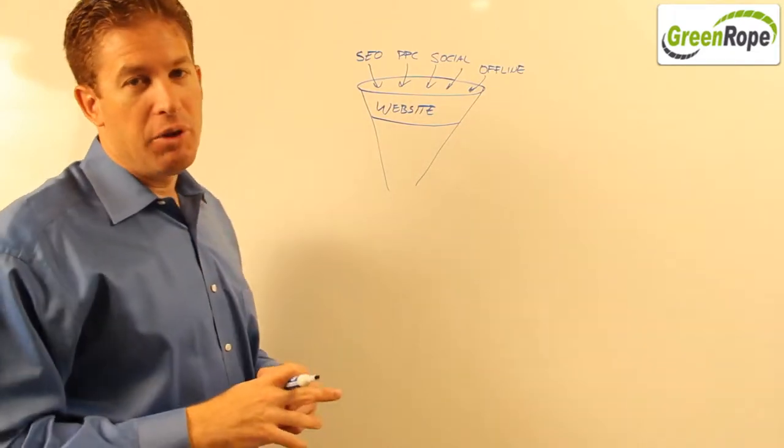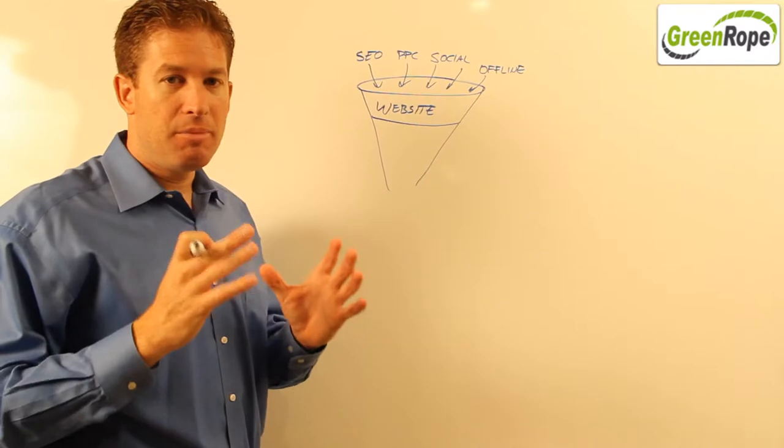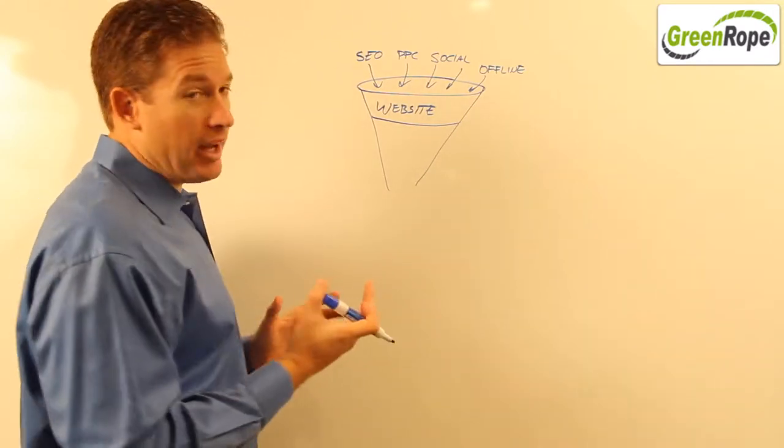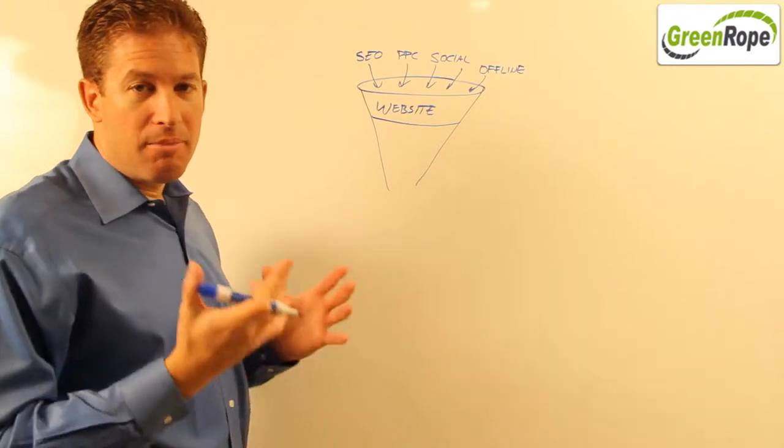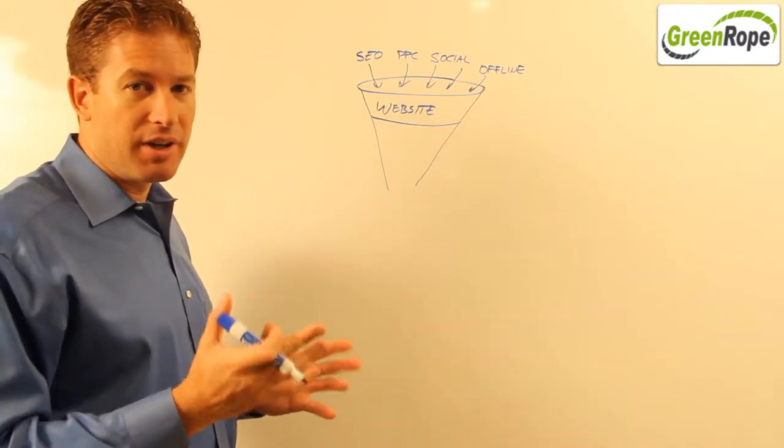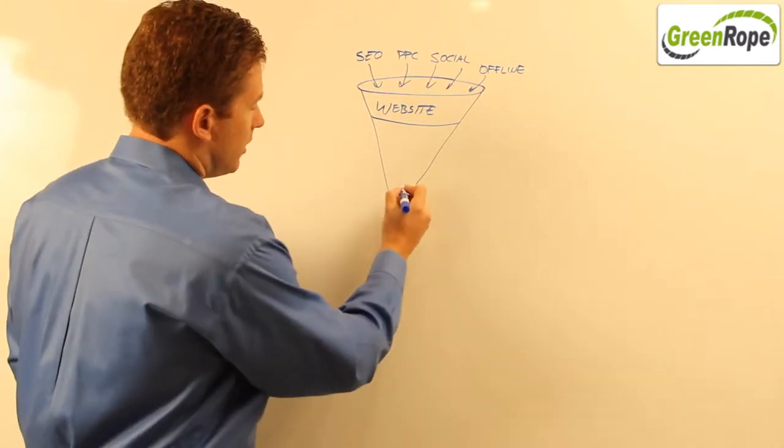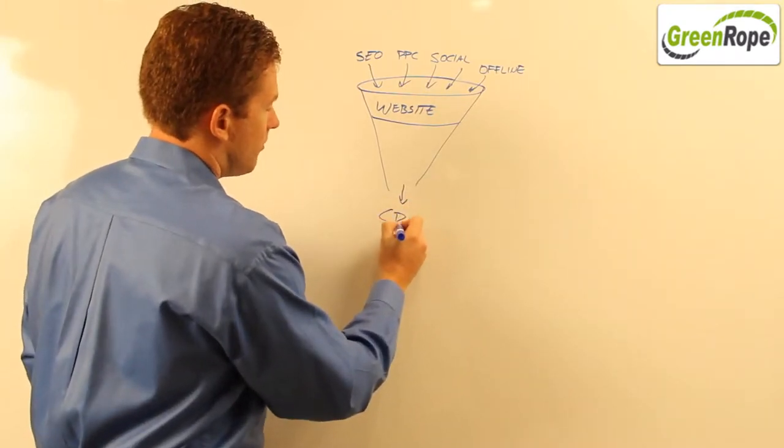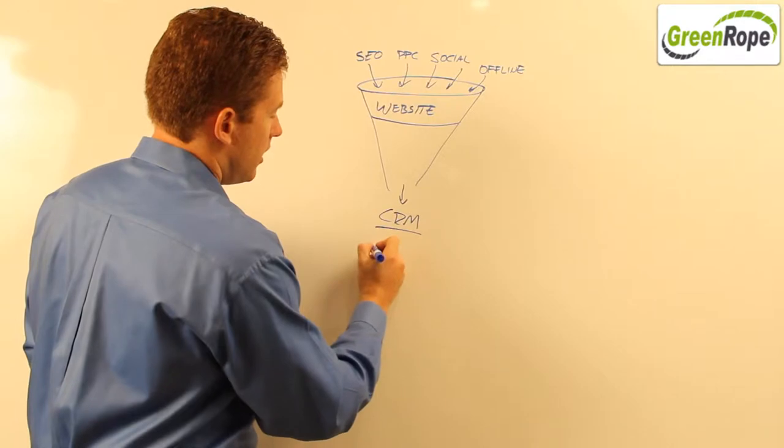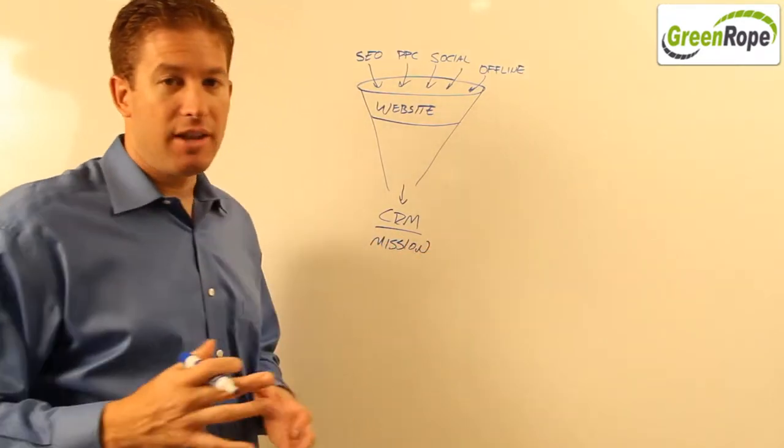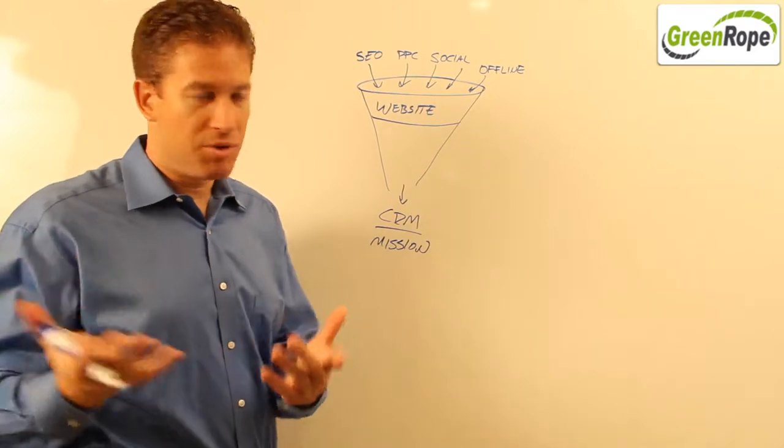Once they get there, you want to maximize the number of people that apply and turn them into students. And so to do that, you want to offer them something that makes sure that they never leave your CRM. So your CRM, your customer relationship management, really is at the bottom end of this funnel because it ties directly in with your mission. Your mission to educate them in whatever means, whatever programs you have set up.